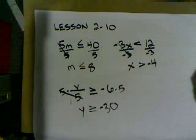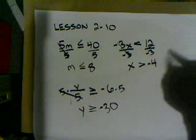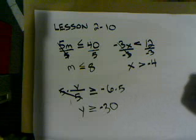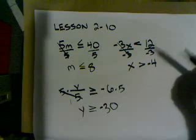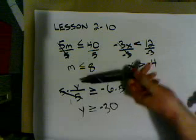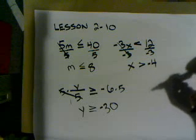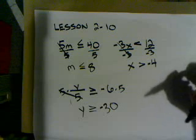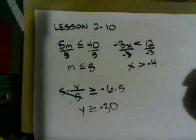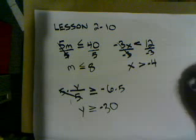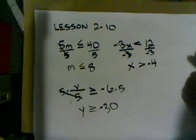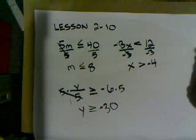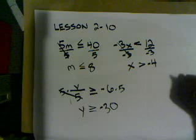Solving inequalities by multiplying or dividing is the same as solving equations, except remember that one thing: if you multiply or divide by a negative on both sides of your inequality, you need to flip the symbol. Otherwise, same deal. And remember, you can always check your work — take what you get, put it back in your original inequality, and see if it works. There's not a real good excuse for missing these because you can always check your answer. This is the last section in Chapter 2, and we'll be coming up with a chapter review after this.